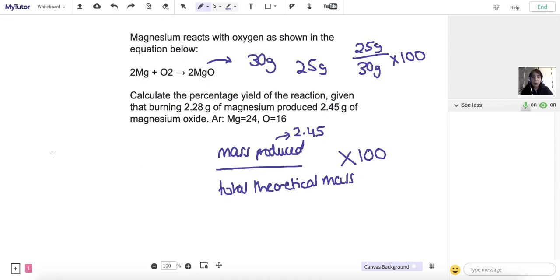The number of moles is equal to the mass over the relative formula mass. So in magnesium, the mass is 2.28, and we divide that by the relative atomic mass in magnesium, because it's just an atom on its own. So that's 24. If you put that into the calculator, you will get 0.095.